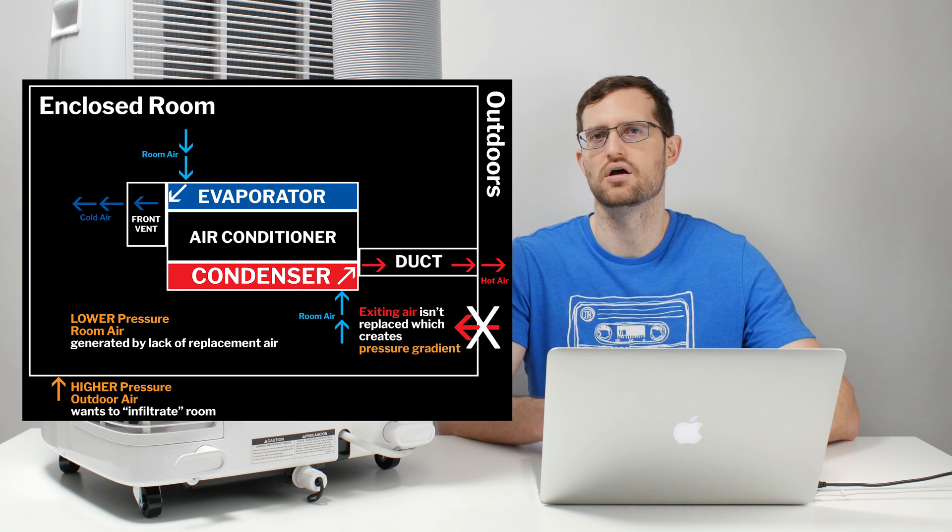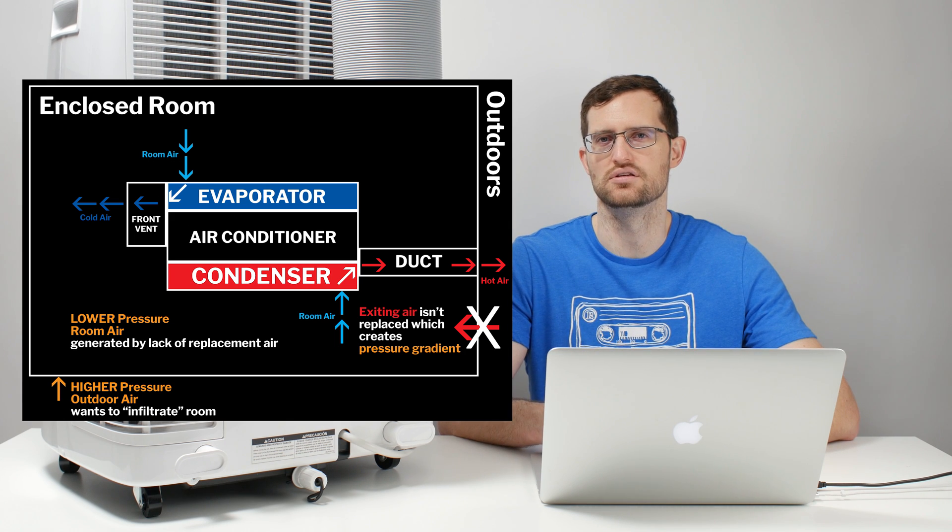So that infiltration air wants to come into the room. It does in fact find ways to come into the room. And when it does, it adds heat back into the room, reducing the actual cooling capacity of the unit.